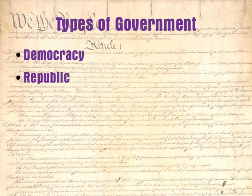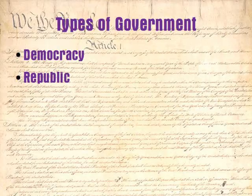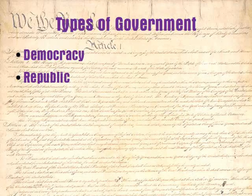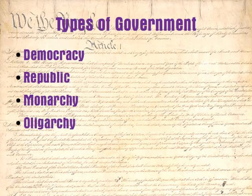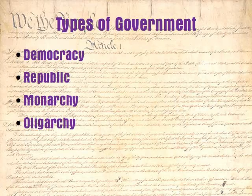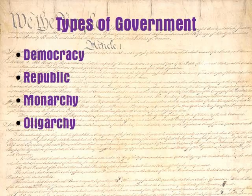We'll cover these two types of government, their similarities, their differences, and why it's important. But in order to fully understand the issue, we also need to consider two other types of government: monarchy and oligarchy. These four basic types will give you a full perspective and context for understanding how our government is set up and why it was set up that way. Now there are other forms of government, but with a few exceptions, most of them can be placed into one of these four categories.